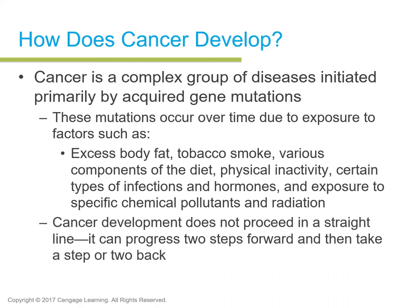Cancer development does not proceed in a straight line. It can progress two steps forward then take one or two steps back, with a really irregular pattern. Some people develop cancer, recover, and it never reoccurs again. Others recover but continue to have reoccurrences. Everyone's situation is a little different.